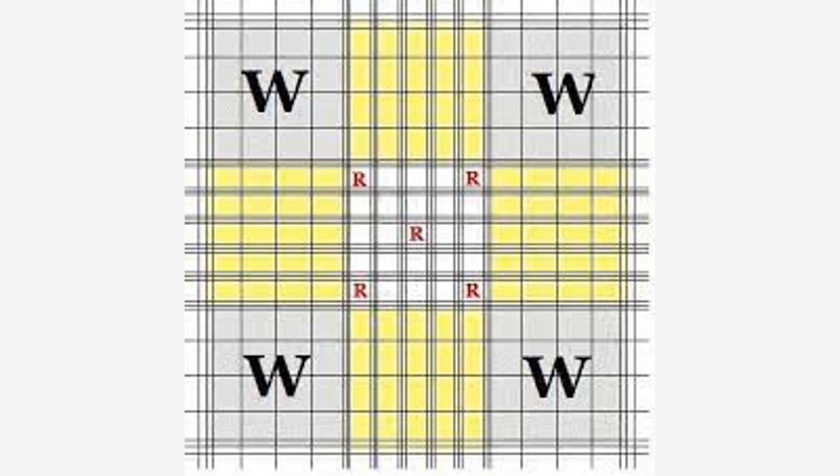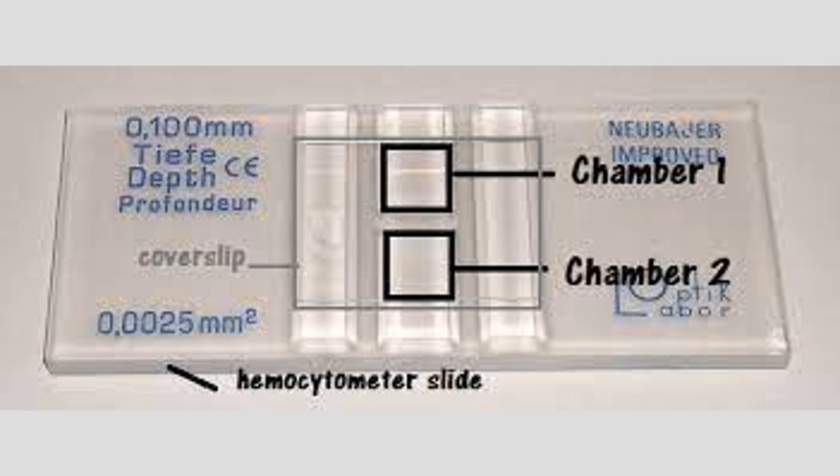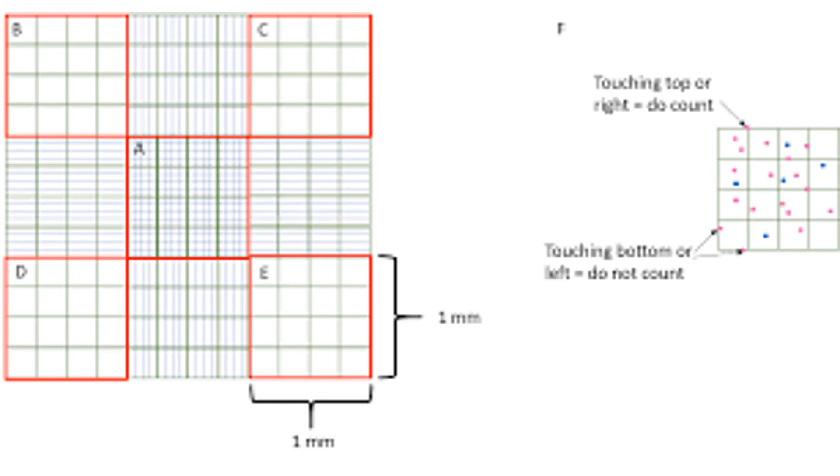The grid divides the central area into smaller squares or rectangles, making it easier to count cells accurately. The most common type of grid pattern is the Neubauer chamber, which is widely used in clinical laboratories.